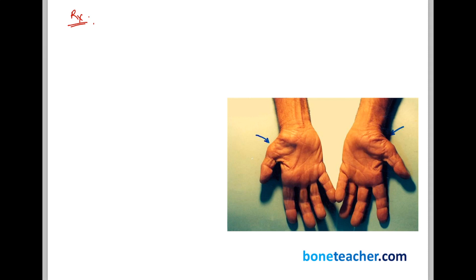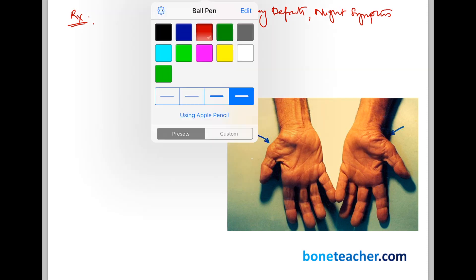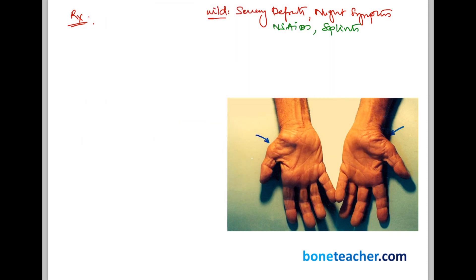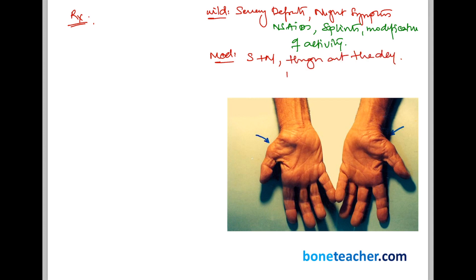Treatment of carpal tunnel syndrome depends on the stage of presentation. If the patient presents early with mild symptoms — only sensory deficit or night symptoms — conservative therapy is used: NSAIDs, splints, or modification of activity. If there is moderate carpal tunnel syndrome with sensory plus motor symptoms and pain throughout the day, the above plus or minus steroid injections may be required.